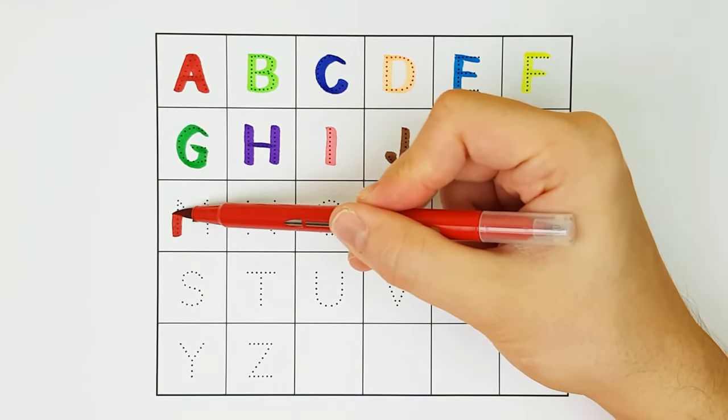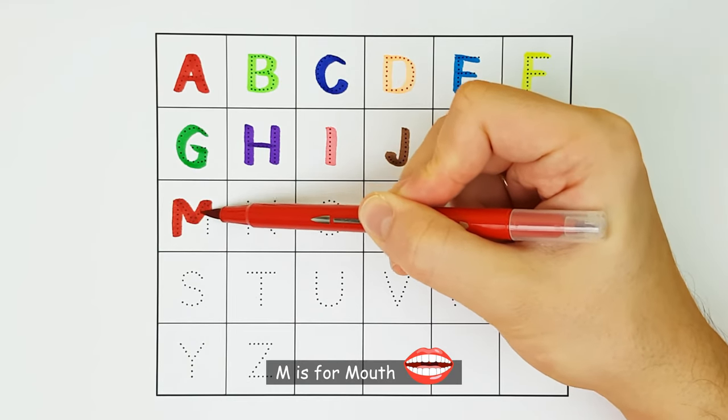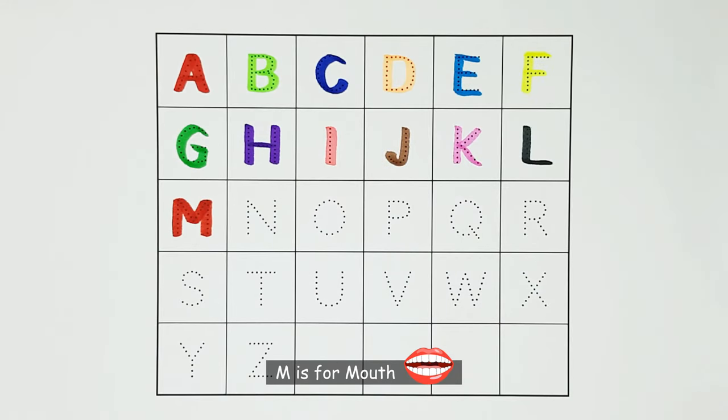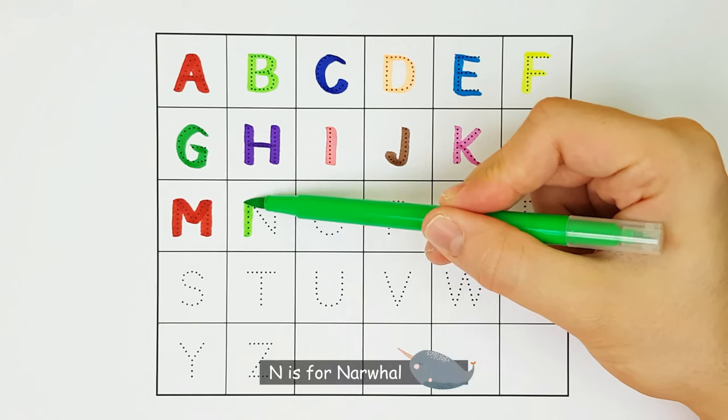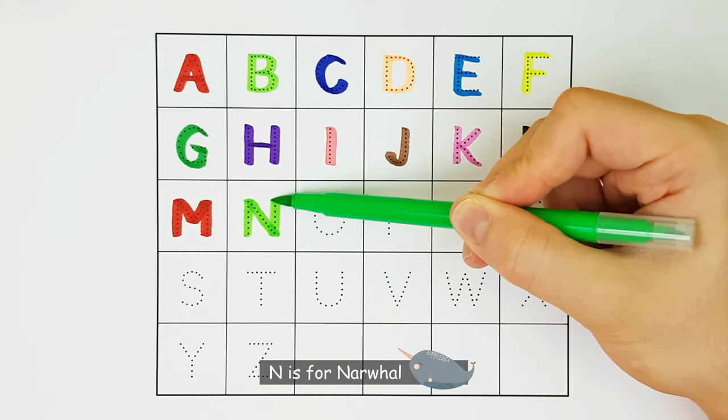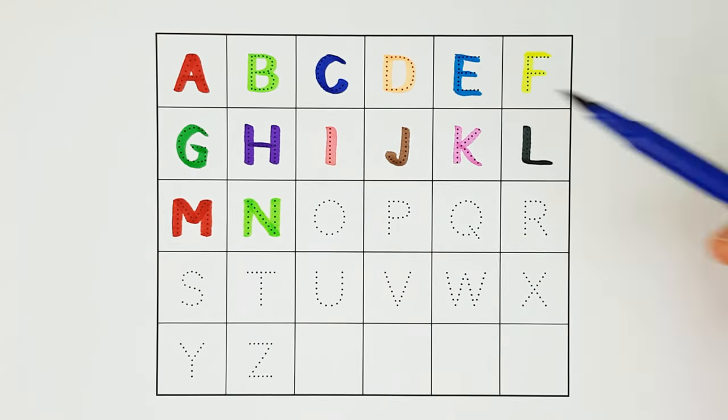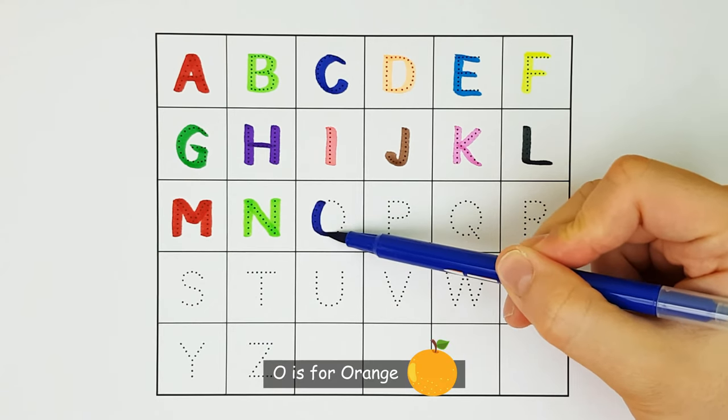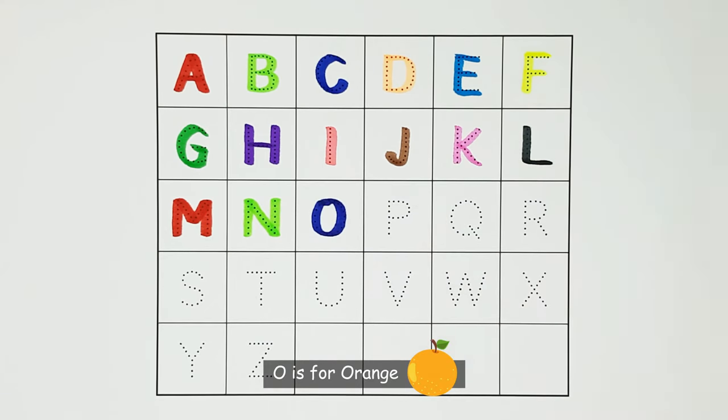M. M is for mouth. M. N. N is for narwhal. N. O. O is for orange. O.